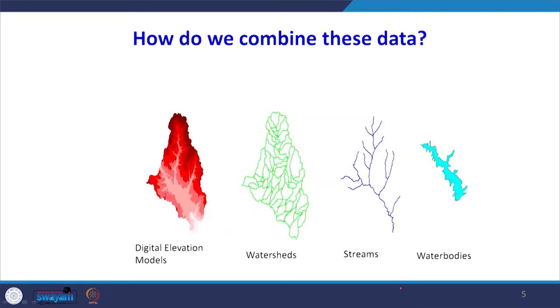We can combine data sets together. A simple example: we have a digital elevation model map where different colors indicate different heights — darker colors indicate higher regions. Then we have a watershed map where different watersheds are shown by polygons. Within the watershed there is a stream network, which is a line feature showing several interconnected streams. There is also a water body — a big reservoir — as a polygon feature. We have several layers together and must combine them using overlay analysis, Boolean operations, arithmetic or logical operations to derive useful results.